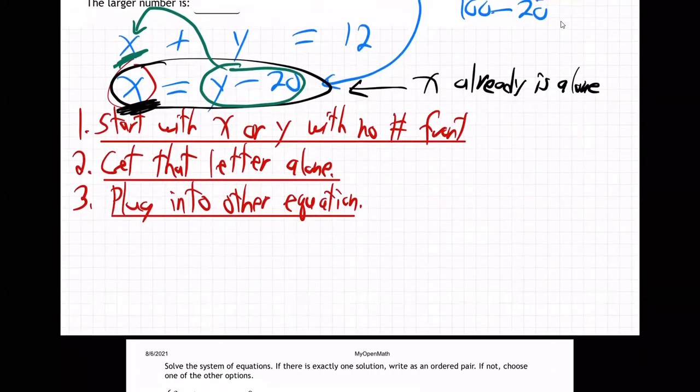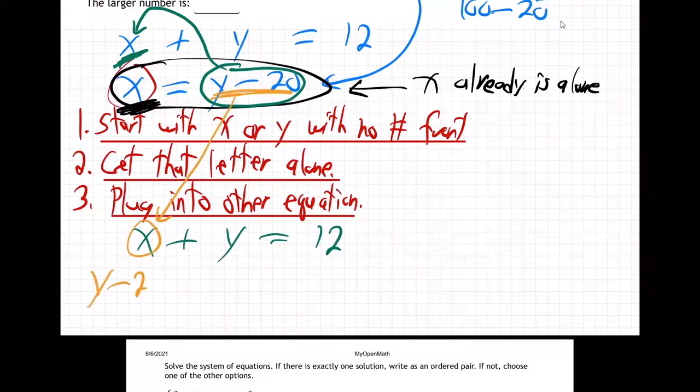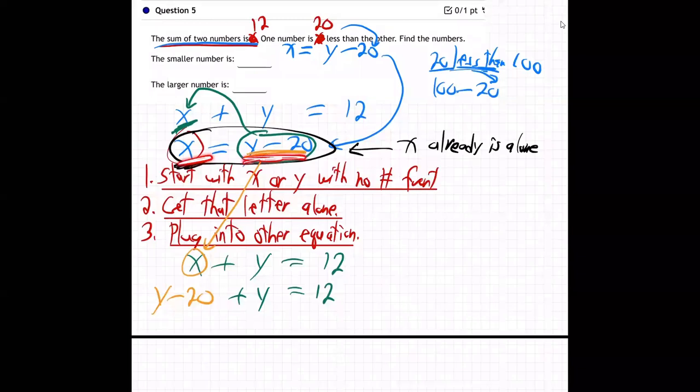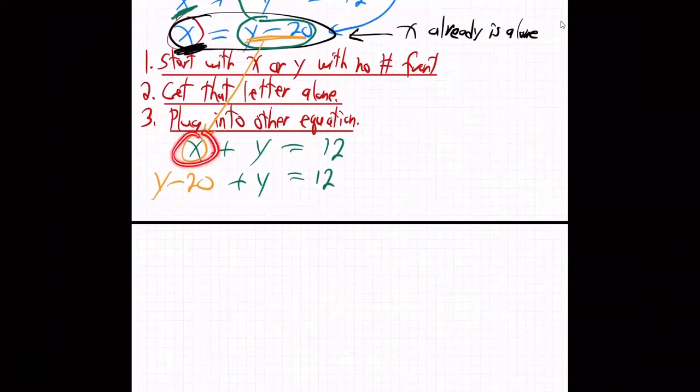So that equation will, let me bring it on down just to be extra clear here. So I'll bring down the top equation, X plus Y equals 12. And then I'm going to plug in Y minus 20 right there for X. So I'll get Y minus 20 plus Y is 12. So do you see what I've done? I've taken the bottom equation, which had X alone, X is Y minus 20, and plugged it in for X in the top equation. You plug into the other equation. So in for X goes Y minus 20.